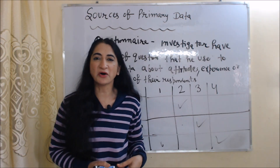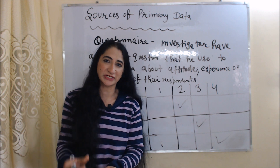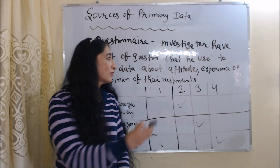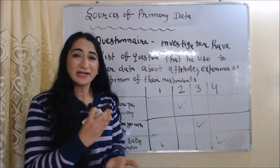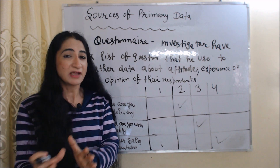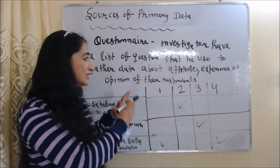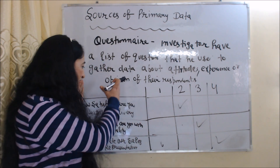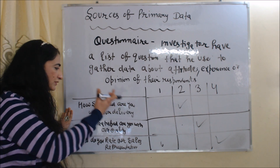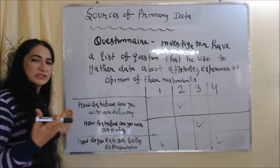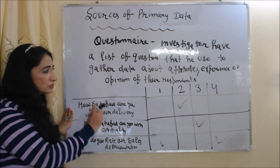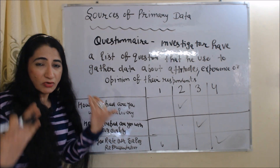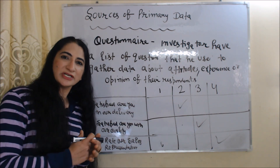The next source of primary data is the questionnaire method. Under this method, investigators have a list of questions which they use to gather data about attitudes, experiences, and opinions of their respondents. For example, an ABC company wants to know customer feedback about their product. They have a list of questions such as: How satisfied are you with our delivery? How satisfied are you with our quality? How do you rate our sales representative? Choose a number between one to four. This list is given to customers to fill in. It is called the questionnaire method of collecting data.